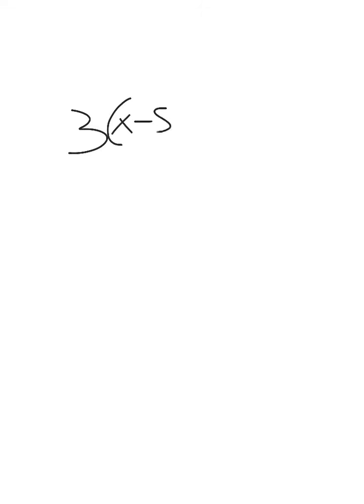Let's look at equations that have distribution on both sides. So if I have 3 times x minus 8 equals 2 times x plus 5, the first thing I look for is the distributive property.